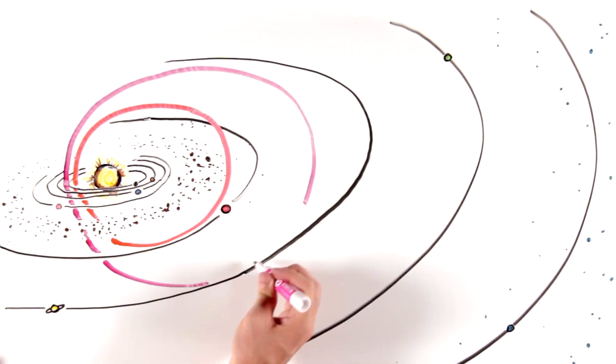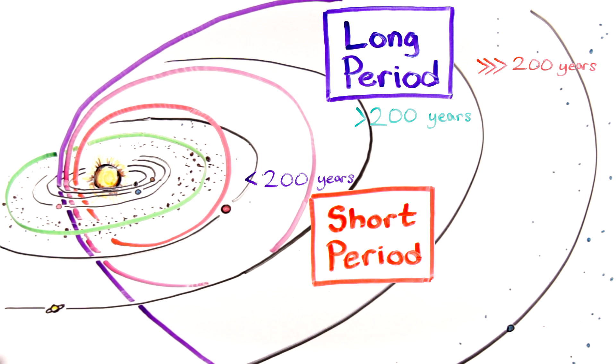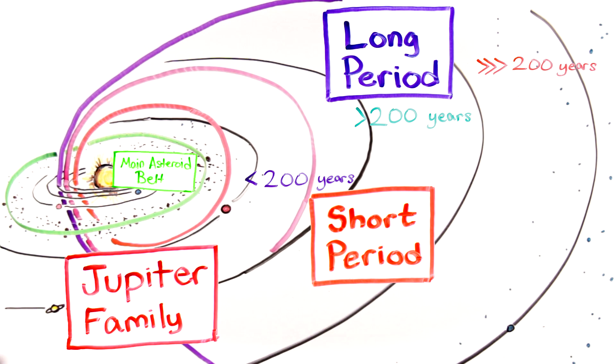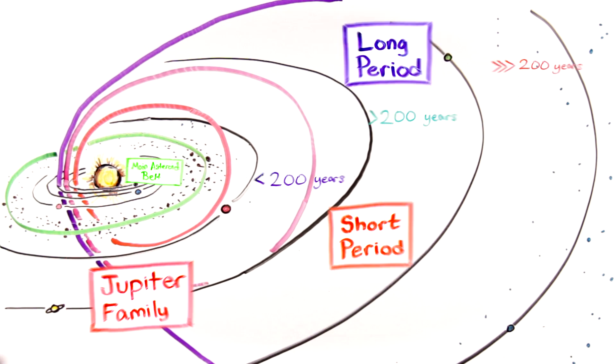Traditionally, scientists described comets as short and long period, and even Jupiter family and main belt comets based on their orbital periods.